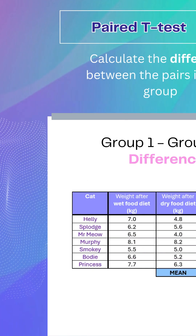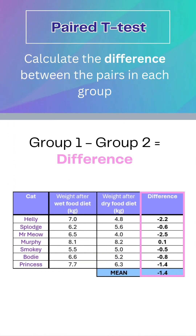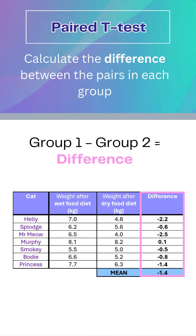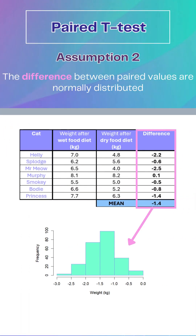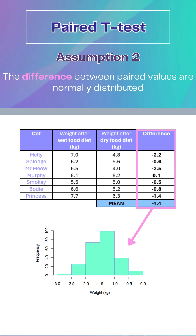The differences between the values in each group is used to determine the mean. The mean is compared to the expected value if there was no difference between the groups, called mu, which in this case is zero. Because of this, it is the difference between values — not the values in the individual groups — that must be normally distributed, which is our second additional assumption.